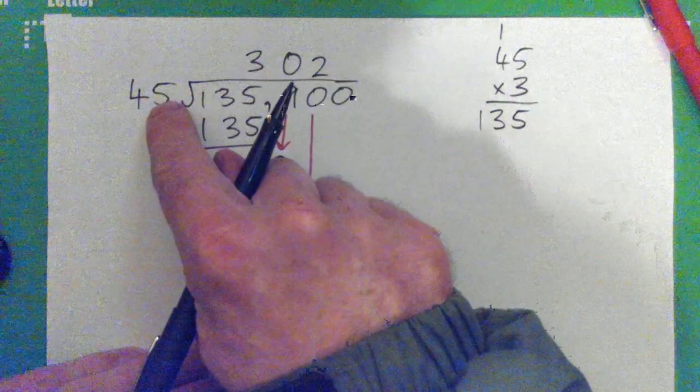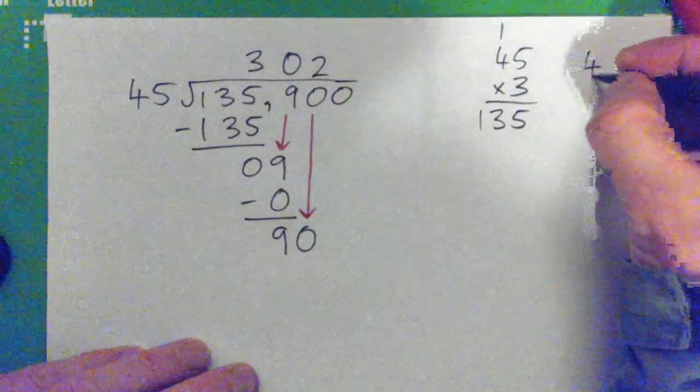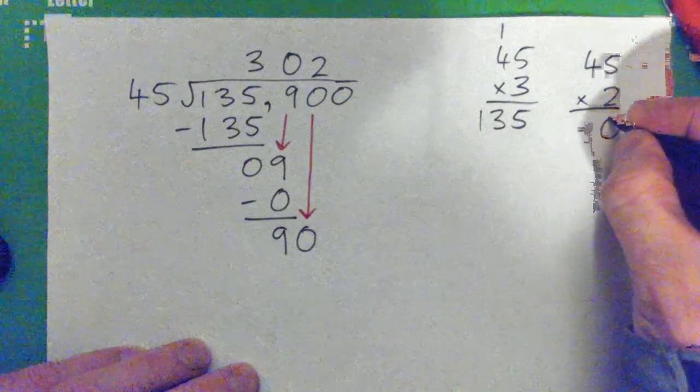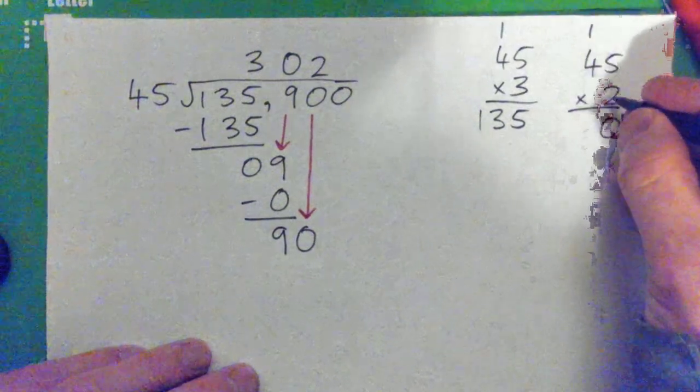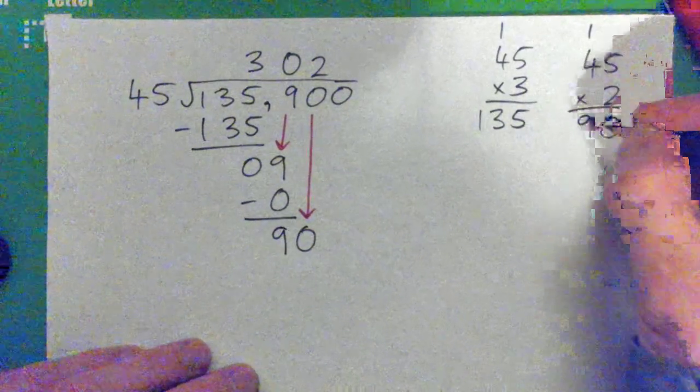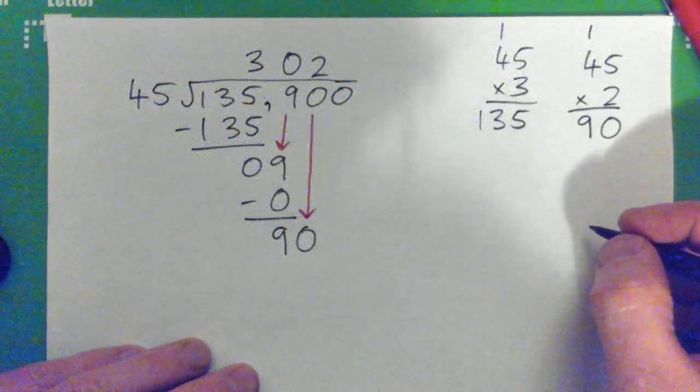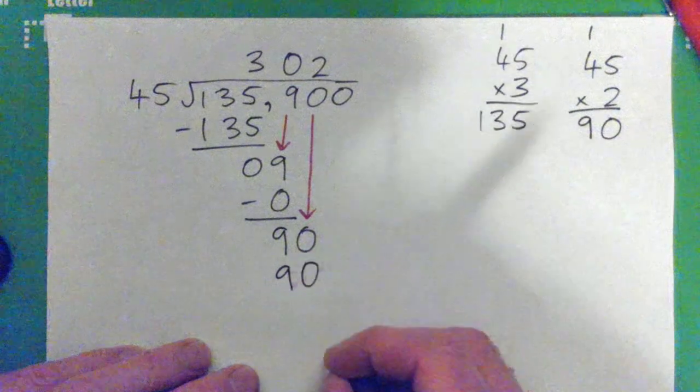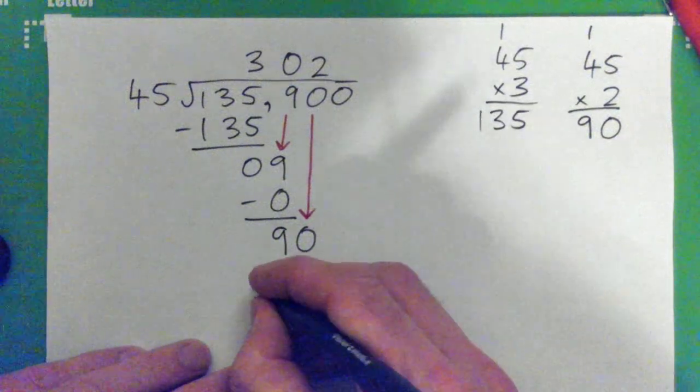2 times, well I guess I'll do it over here, 45 times 2. 2 times 5 is 10, carry 1. 2 times 4 is 8 and 1 is 9, right? Lovely, so 2 times 45 is 90. Okay with that, subtract and you get...